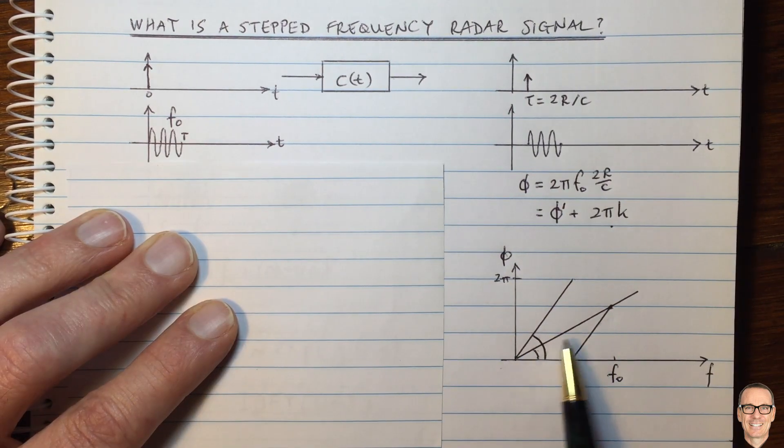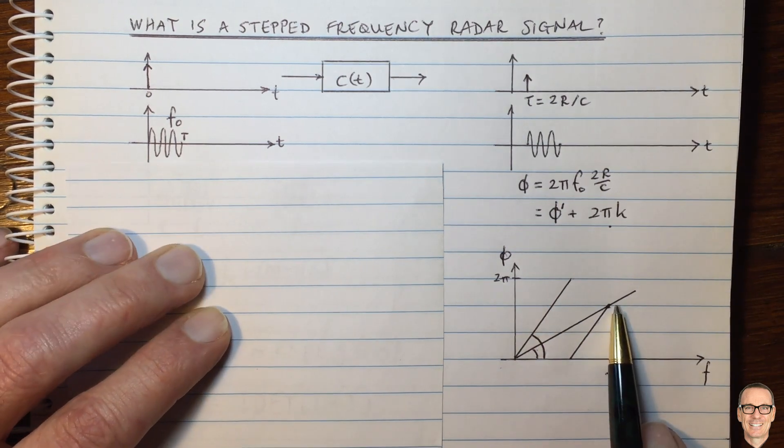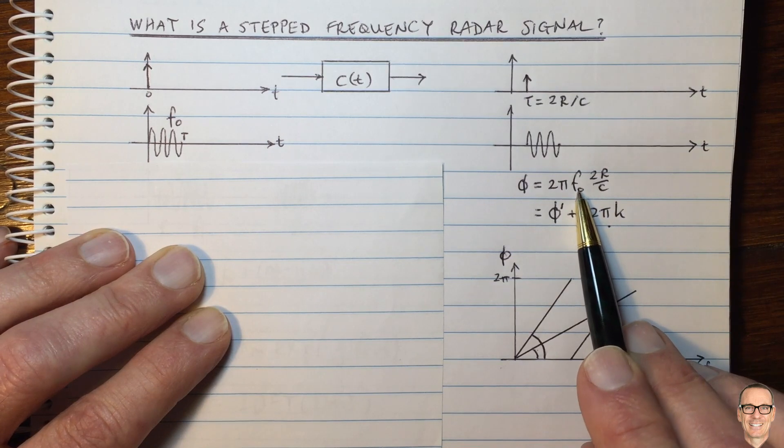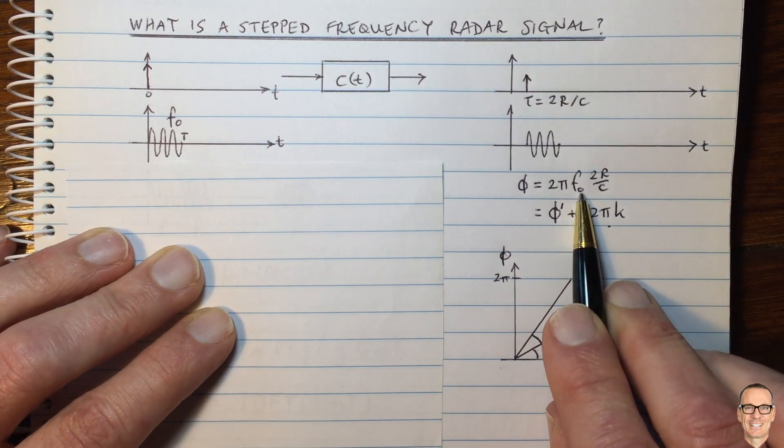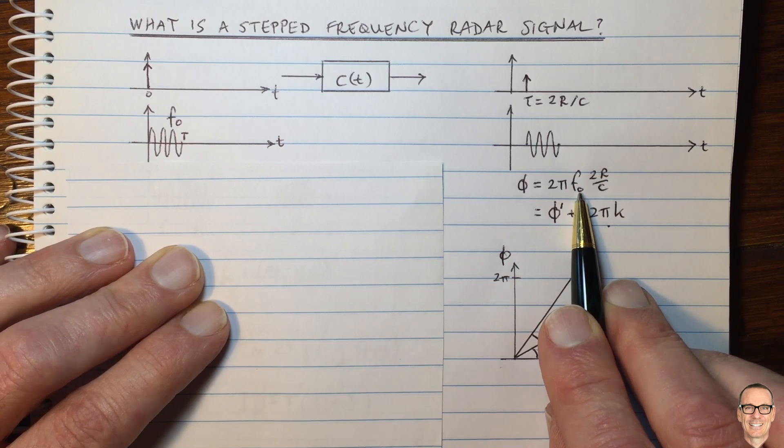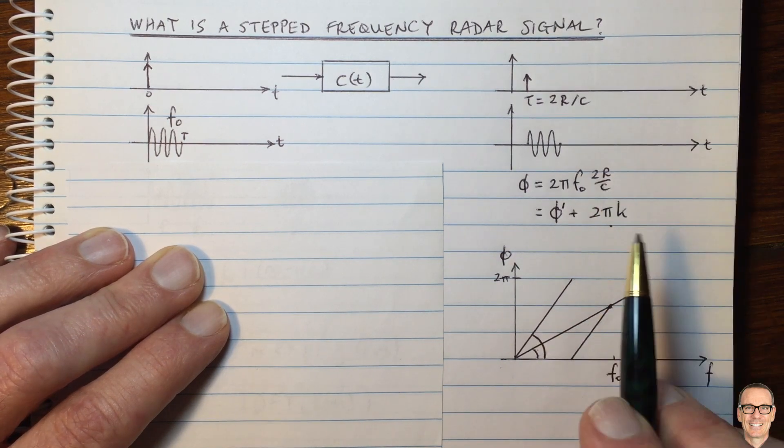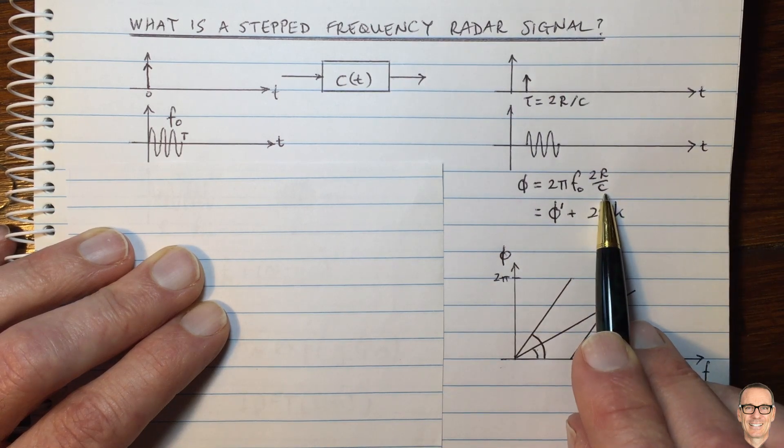So you might ask, how much of a problem is this? How far would you have to move in order to have this ambiguity? Well, if we take an F0 of 500 MHz, a typical frequency for radar, and C is of course 3 by 10 to the 8, then we can see 2 times F0 divided by C equals 1.67.